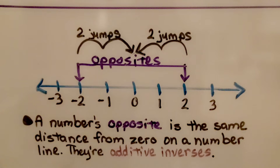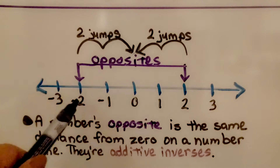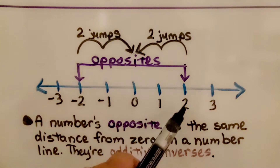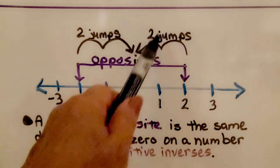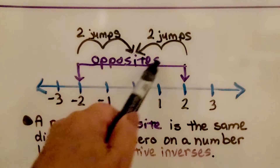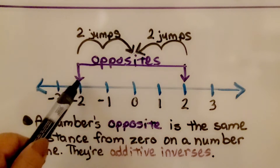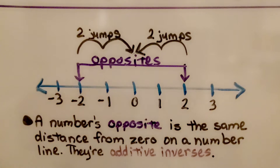Remember, a number's opposite is the same distance from 0 on a number line — they're additive inverses. Negative 2 is 2 jumps away from 0, and positive 2 is 2 jumps away from 0. They are opposites across 0 on a number line; they're additive inverses.